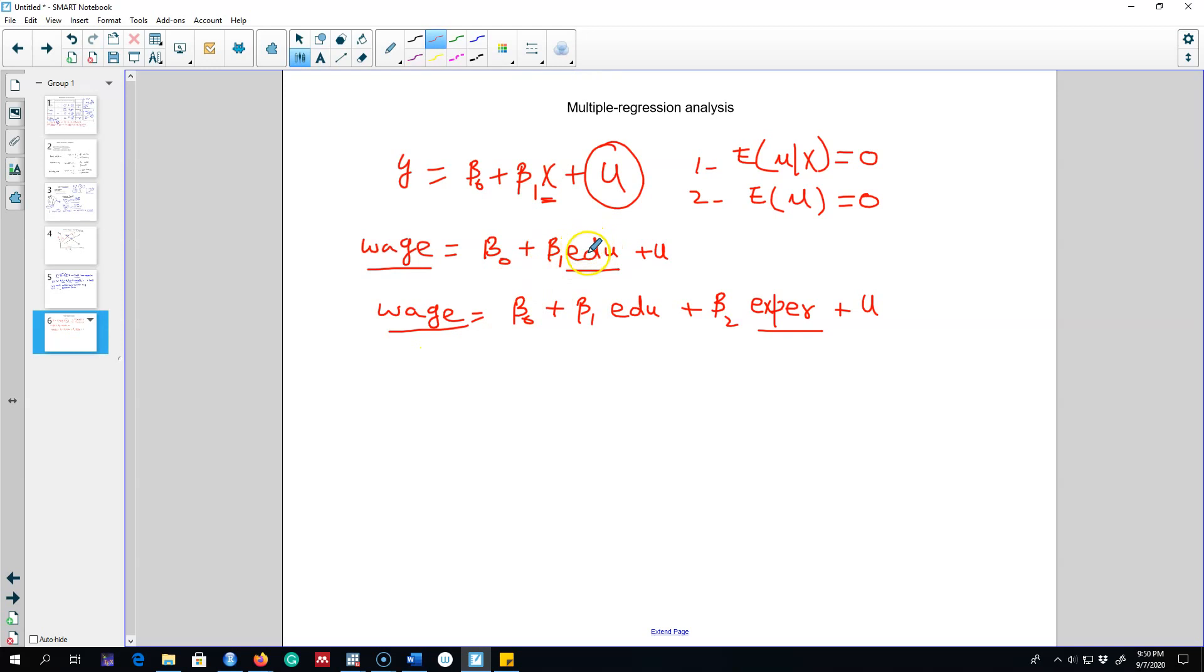So in this simple case, anything that was not explained by education, for example experience, was captured by this u term. But the problem is we were making an assumption here that education and mu - the correlation between these two is zero, or the expected value of u given education is zero. If we introduce experience here, essentially we are making the assumption that the expected value of experience given education is zero. So we make this absurd assumption that experience is uncorrelated with education.